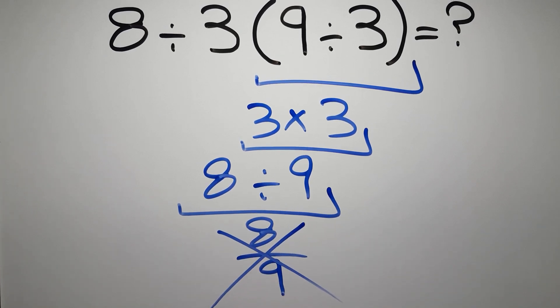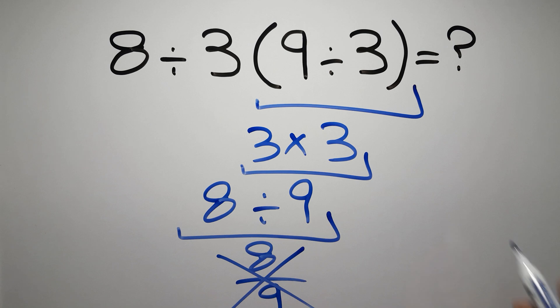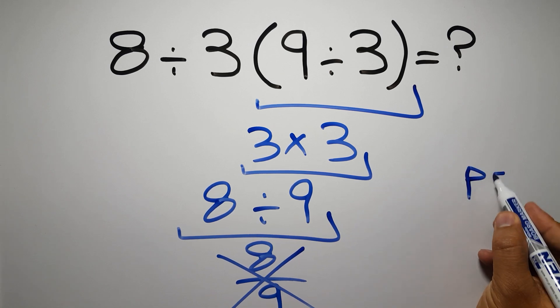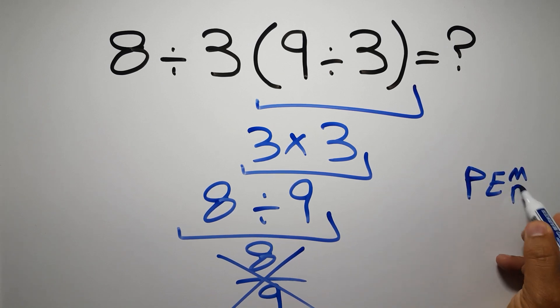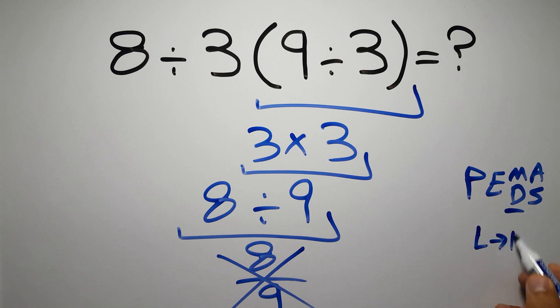Because according to the order of operations, first we have to do parentheses, then exponents, then multiplication or division, and finally addition or subtraction. Remember that multiplication and division have equal priority, and we have to work from left to right, and the same applies to addition and subtraction.